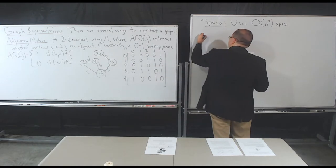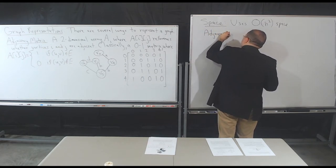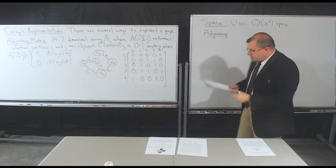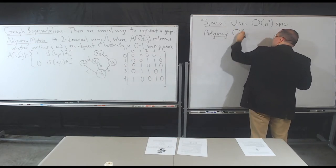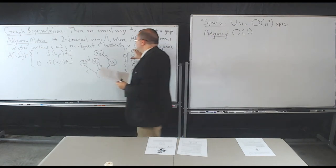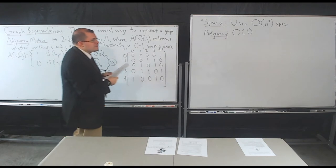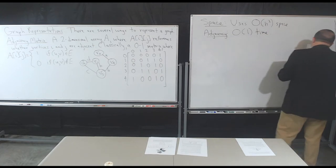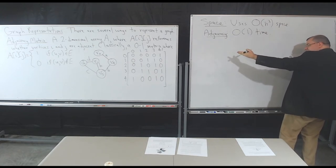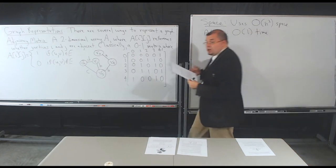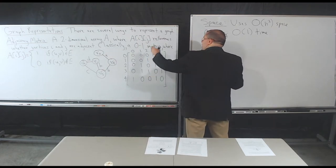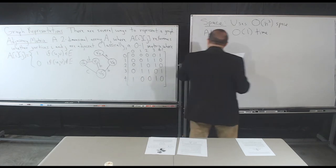If I want to determine if two vertices are adjacent to one another, how long does that take? It should take O(1) — if I can index directly into this matrix, all I have to do is look at the entry, just like I did before. So this takes O(1) time. You can get that adjacency information in constant time, because it's just like accessing an array. The whole point is that you have some way of indexing into the matrix by the vertices.